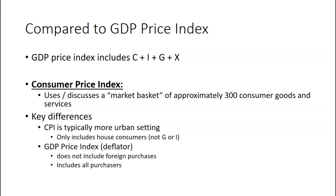CPI is typically more of an urban setting, though you can get rural as well. The GDP price index, or GDP deflator, does not include foreign purchasing, but it includes all domestic purchasers. For our purposes, they're interchangeable.